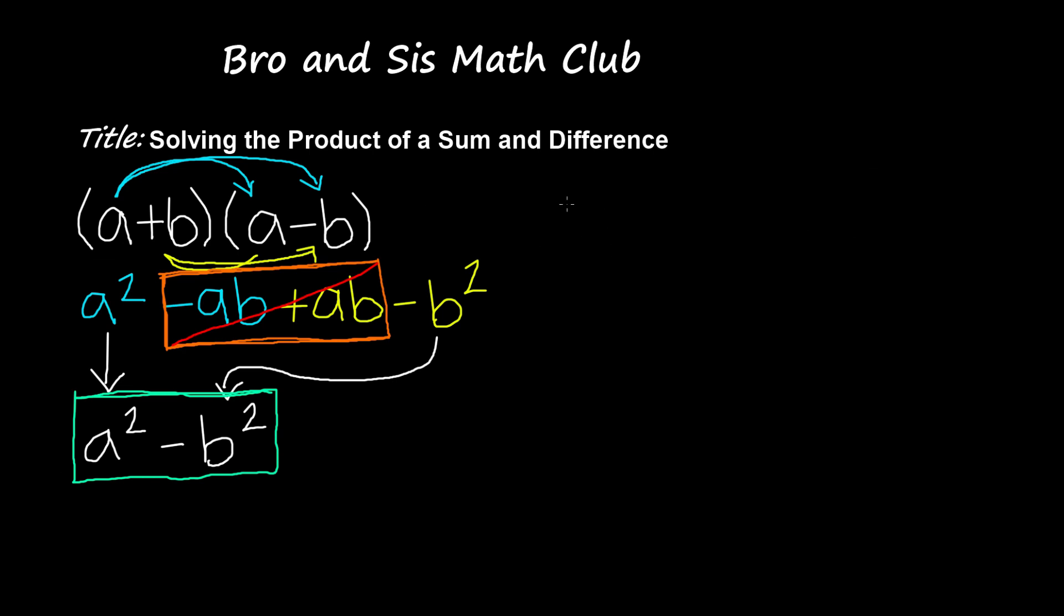So let's say that we have this problem. We have x plus 9 and x minus 9. So x is the a and 9 is the b. So we're gonna go ahead and follow this method, which is a squared minus b squared. So I'm gonna take the x and square it, and then we have minus, and I'm gonna take the b, which is 9, and square it as well. So we have x times x, we get x squared.